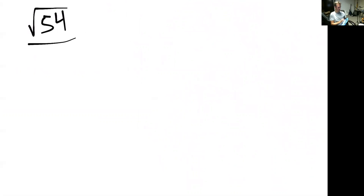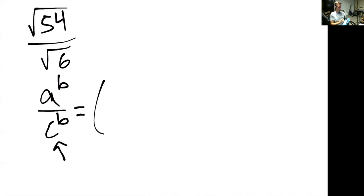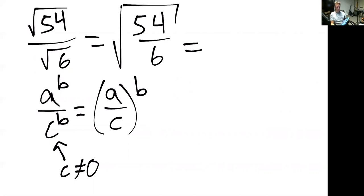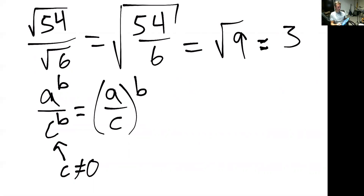Next: the square root of 54 over the square root of six. There's another handy rule about radicals and exponents — a fraction of two numbers: A to the power of B divided by C to the power of B is the same as A divided by C, raised to the B power. So this is the same as the square root of 54 over six. Fifty-four over six is nine, so this is the square root of nine — what number multiplied two times gives us nine? That's three.